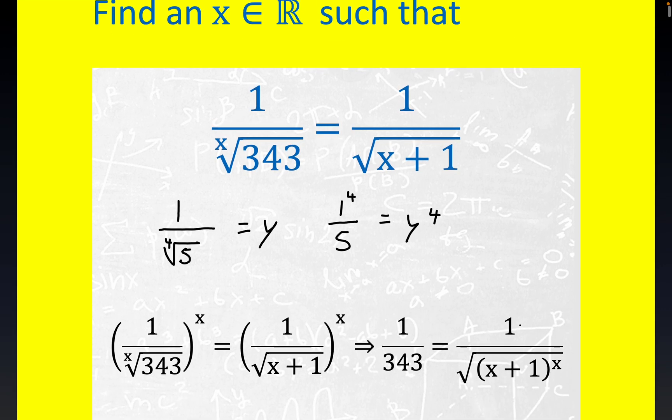Now what we do is we actually raise both sides to the x power in the same way we raise both sides to the fourth power. So that has the effect of wiping out this radical just like it did right here. You see how we went from the fourth root to 5 to just 5? Very same happened right here. We have 1 to the x which is 1 and we just have 343 right here.